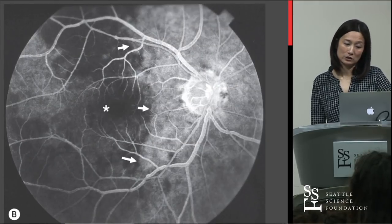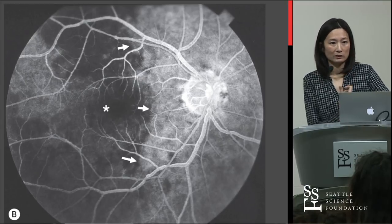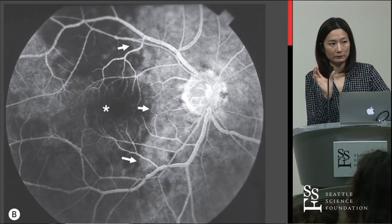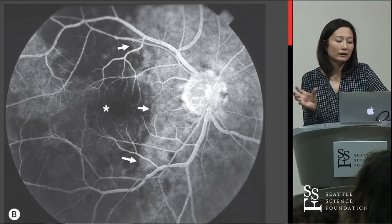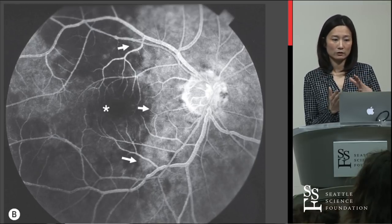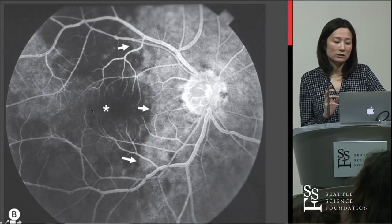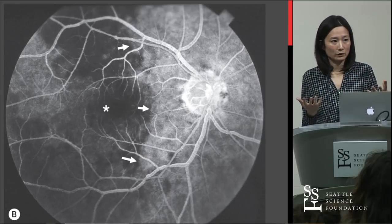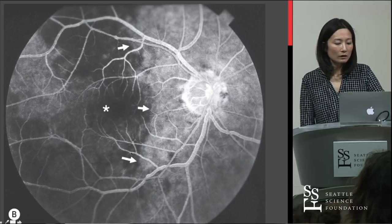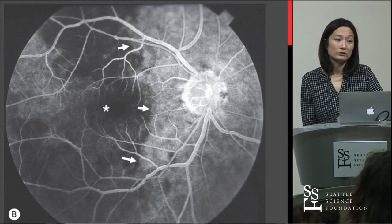Another tool is the fluorescein angiogram, where fluorescein dye is injected intravenously and serial fundus images are taken. In patients with giant cell arteritis there is usually abnormal choroidal filling — the choroid being the rich vascular layer between the retina and sclera, supplied largely by the posterior ciliary arteries. This can help differentiate arteritic from non-arteritic anterior ischemic optic neuropathy when the clinical picture is unclear. Interestingly, abnormal choroidal filling can also be seen in the unaffected eye of a GCA patient.